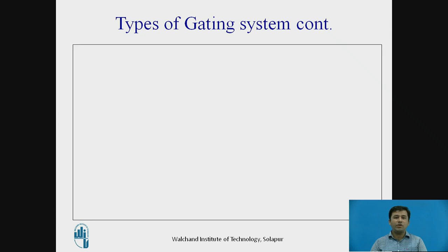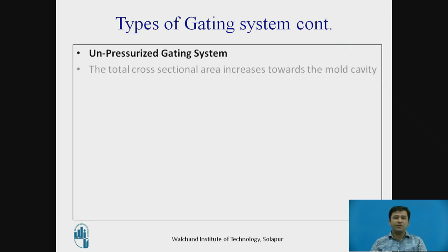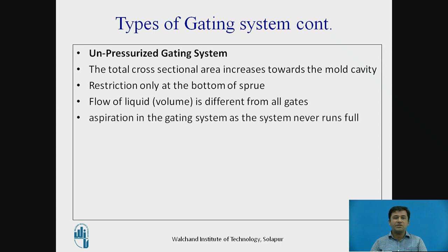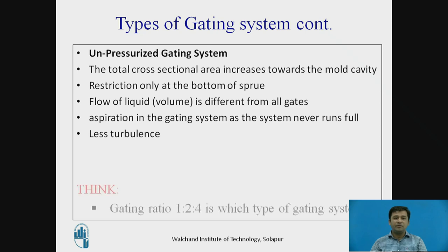Now we look at the unpressurized gating system. In this case, the total cross-section area increases towards the mold cavity. The restriction is only at the bottom of the sprue. The flow of liquid volume is different from all gates, and the system never runs full — which is a disadvantage of the unpressurized gating system. However, there is less turbulence. As a question to consider: if the gating ratio is defined as 1:2:4, which type of gating system would it be?